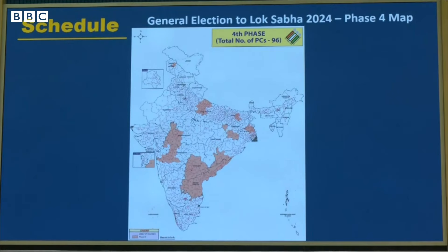Phase 4: date of polling would be 13th of May. Date of counting in the entire country would be 4th of June — for all by-elections, for the assembly elections, and for the parliamentary elections. The map for this phase will look something like this. Fifth phase coming next.